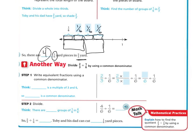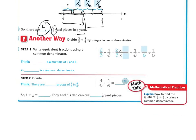Another way is to divide two thirds divided by one sixth using a common denominator. So think, six is a multiple of three and six, so six is a common denominator. In order to make our denominators the same, so we have two thirds divided by one sixth. So if I take these two thirds, I'm going to put it right here.